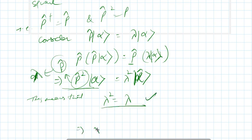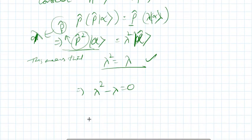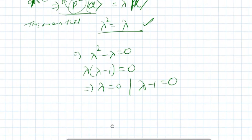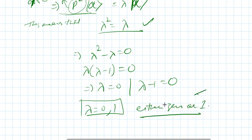That means lambda squared minus lambda equals 0, and lambda times lambda minus 1 equals 0, which implies lambda equals 0 or lambda minus 1 equals 0, which implies lambda equals 0 or 1. Thus eigenvalues are either 0 or 1.